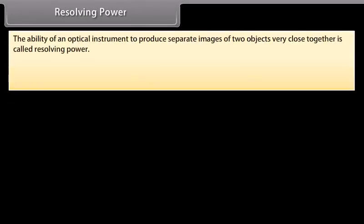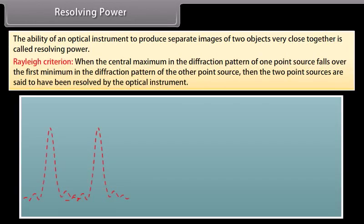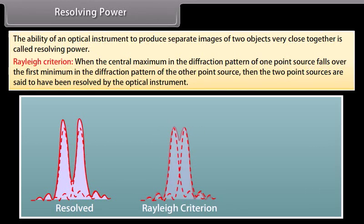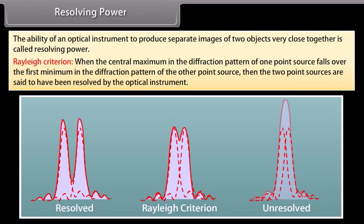Resolving power: the ability of an optical instrument to produce separate images of two objects very close together is called resolving power. Rayleigh criteria: when the central maximum in the diffraction pattern of one point source falls over the first minimum in the diffraction pattern of the other point source, then the two point sources are said to have been resolved by the optical instrument.